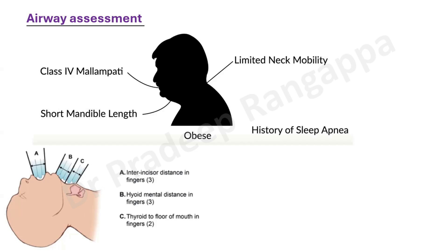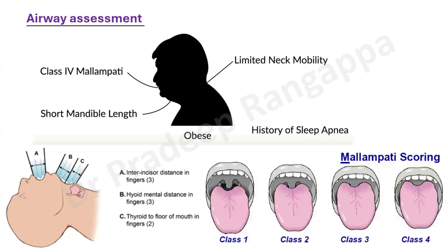Mallampati class 3 or 4 indicates possible difficult intubation. Class 1: you see the uvula, faucial pillars, soft palate, and hard palate. Class 2: you see the uvula, soft and hard palate, but not faucial pillars. Class 3: base of uvula, soft and hard palate only. Class 4: only hard palate visible. Obesity, limited neck mobility, history of OSA, and Mallampati score together tell you whether the patient will have a difficult intubation.